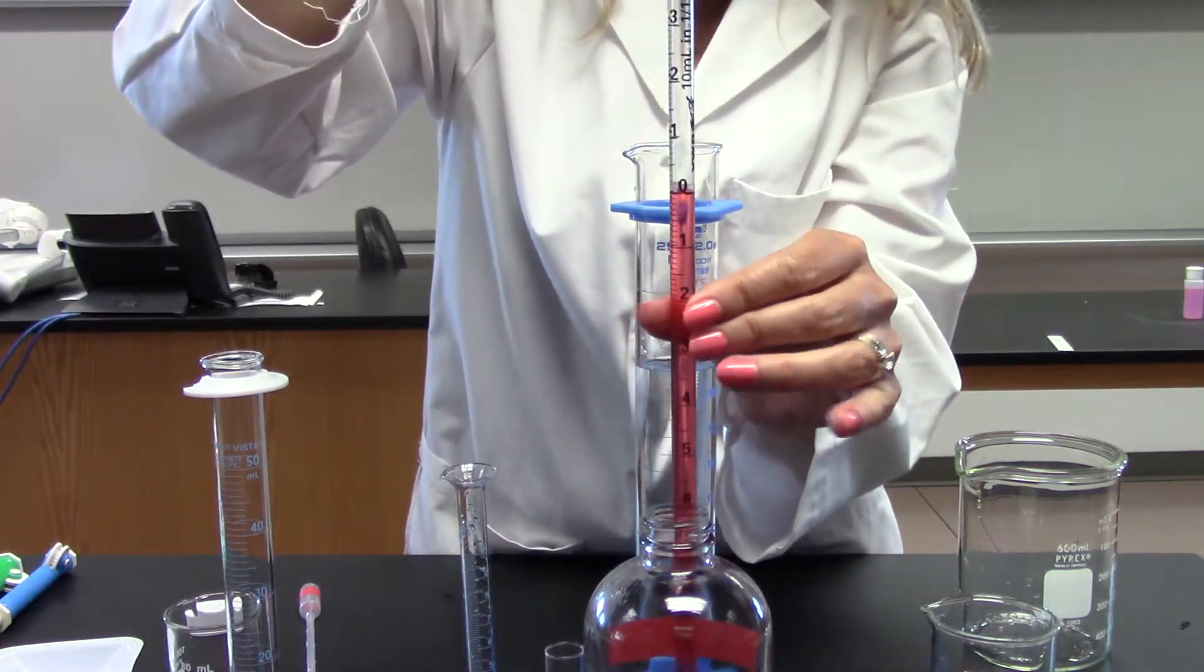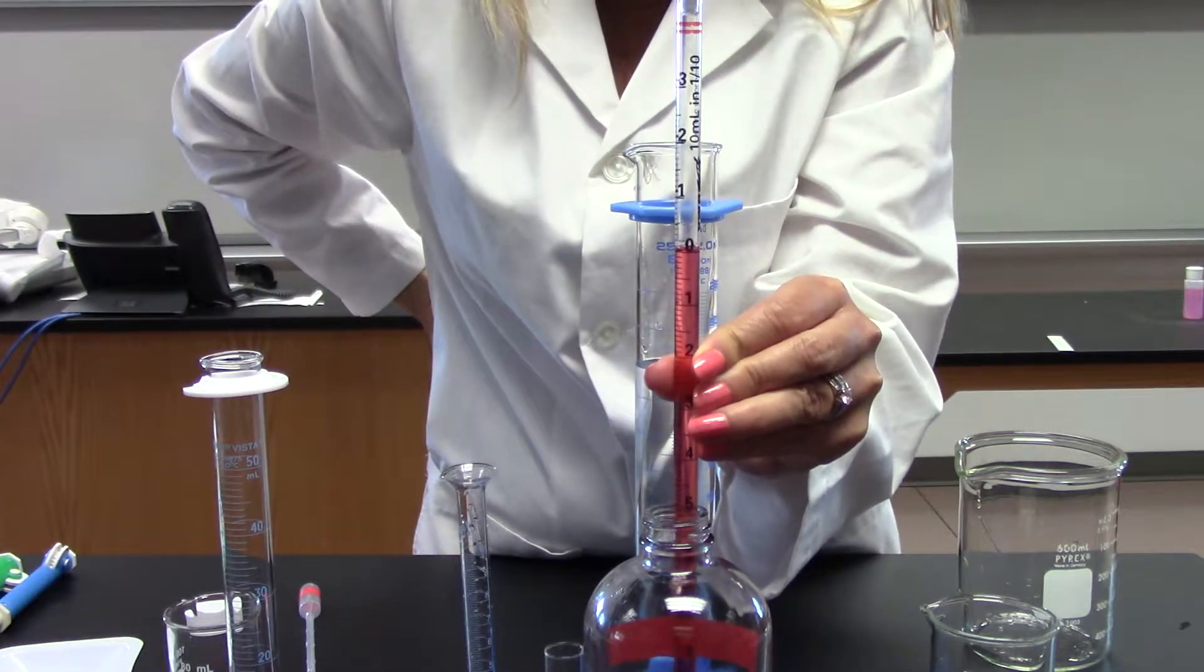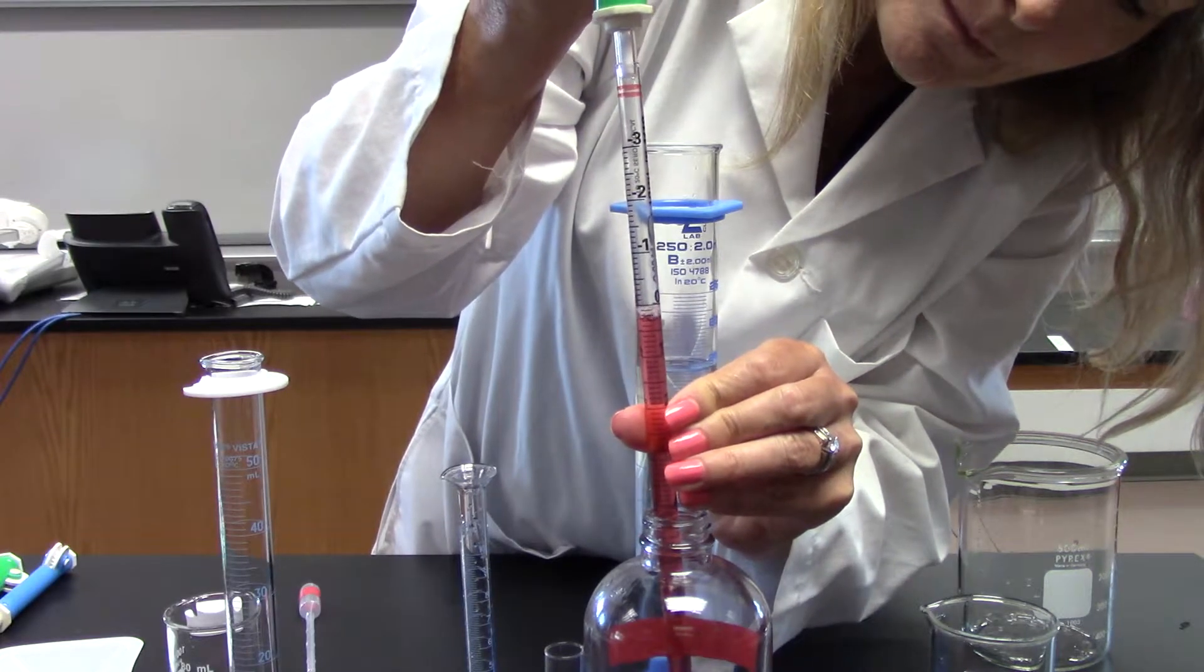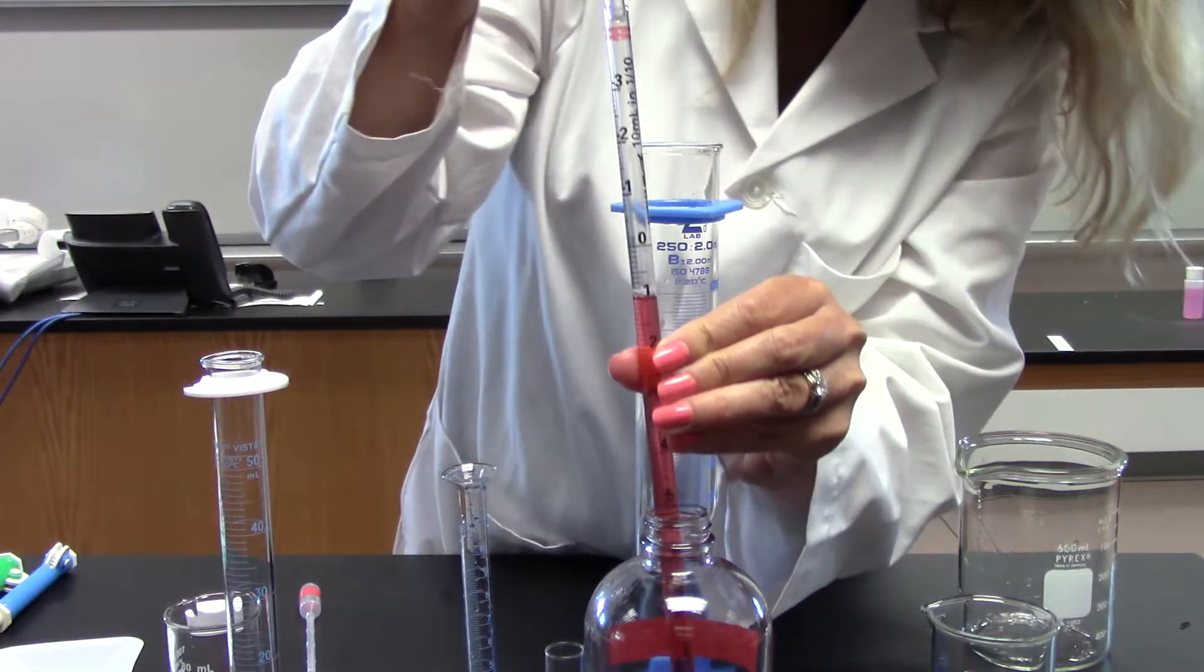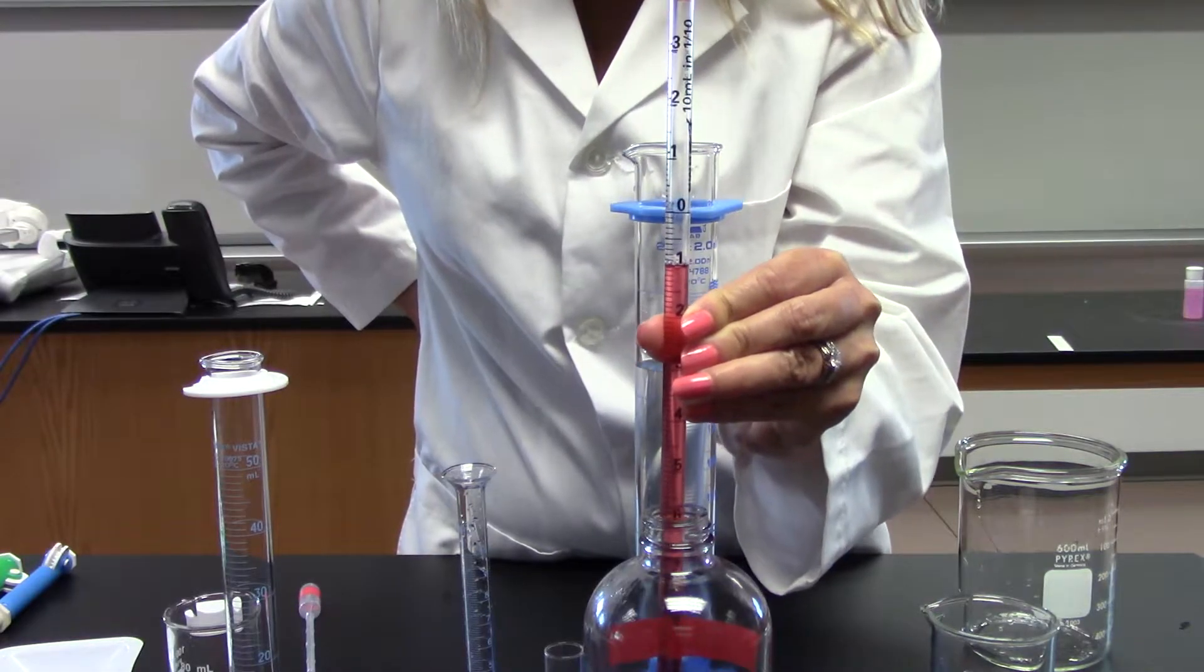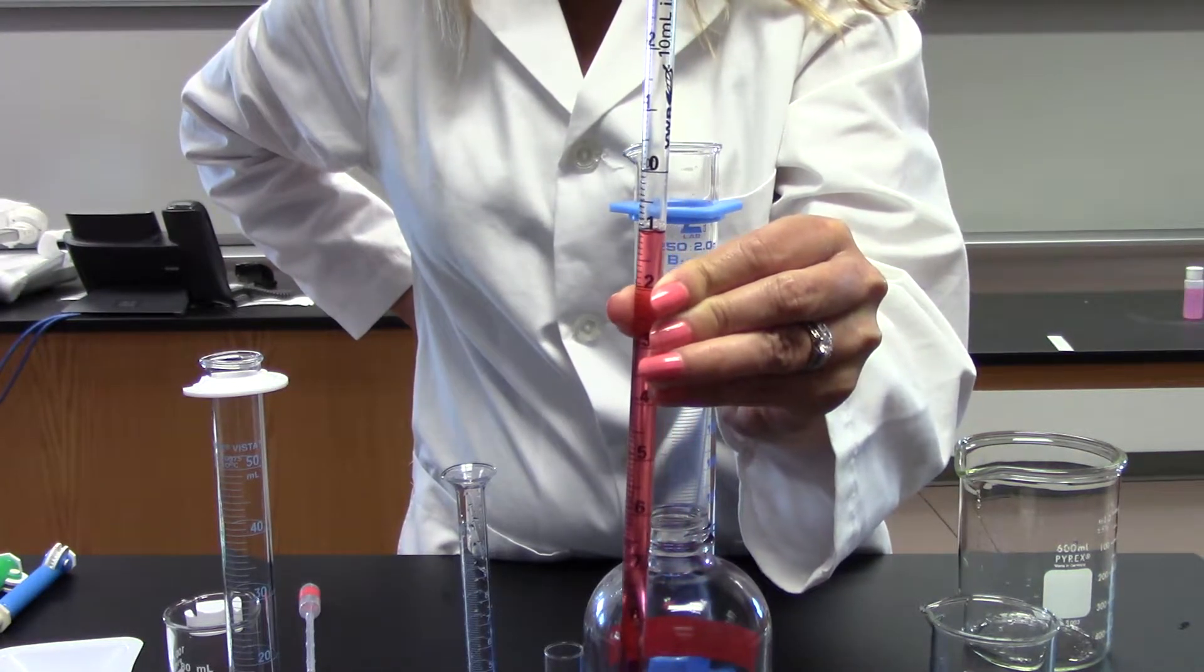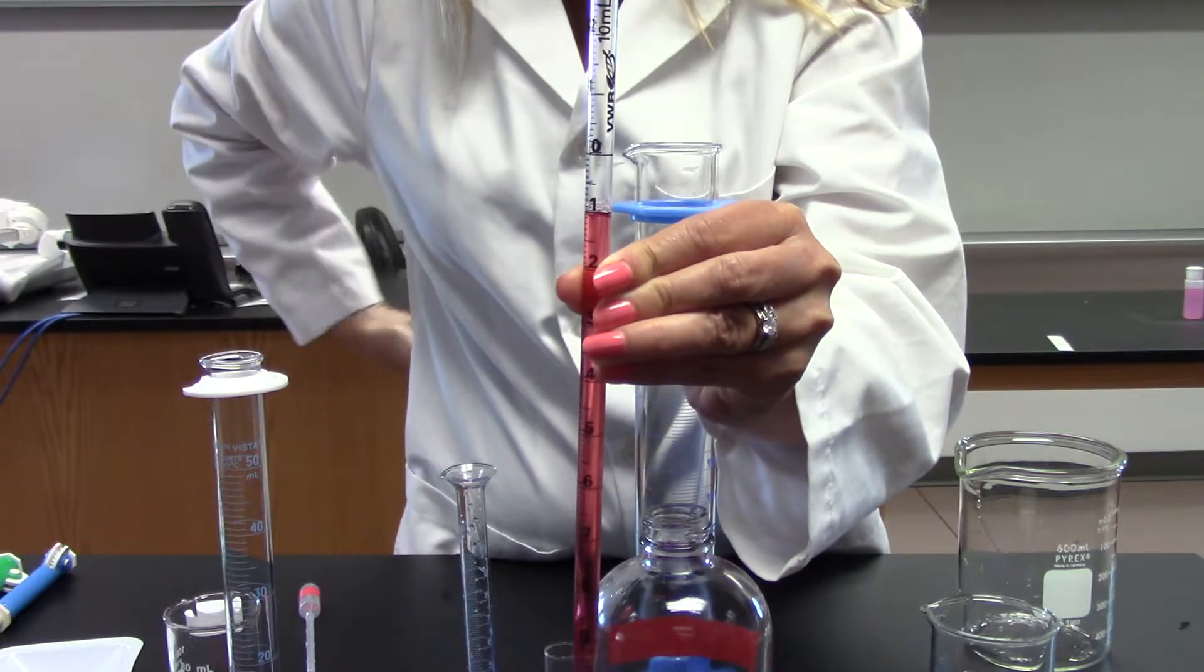It's important to realize though, when I'm at the zero, I don't have zero milliliters of liquid in here, I actually have 10. And if I dispense one milliliter, I don't have one milliliter in here now. I've dispensed one - I did have 10, so now I have nine. So this shows that I have dispensed one milliliter, and that's really the purpose of those reversed graduations.